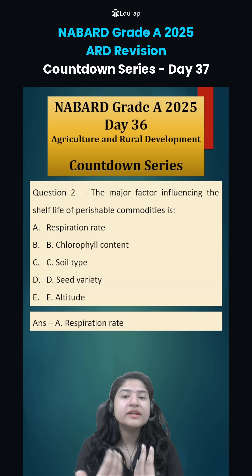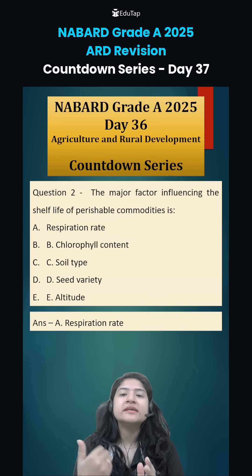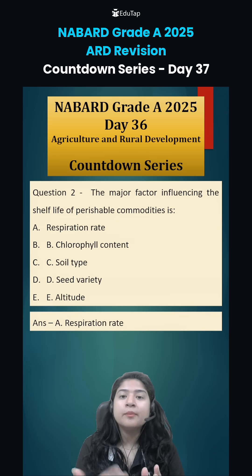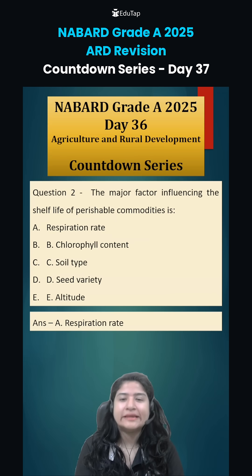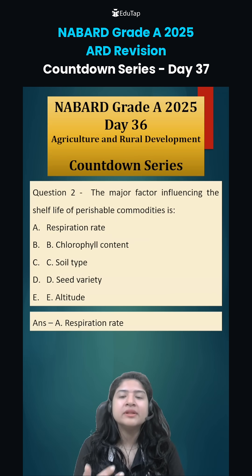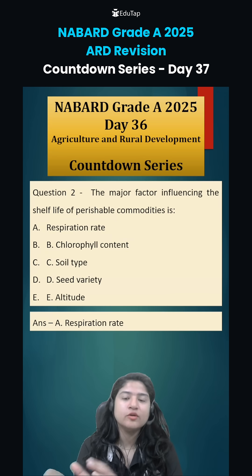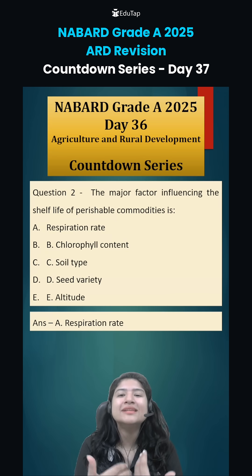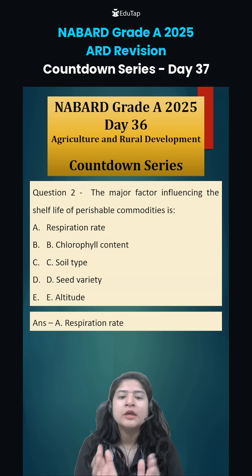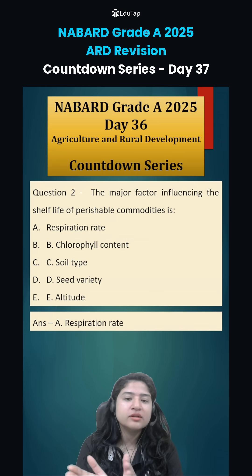If respiration is higher, it means the harvested produce is taking up much oxygen and in return releasing much carbon dioxide, heat, and moisture. Because of that, the product gets bad very easily or quickly — degradation and deterioration occur easily.